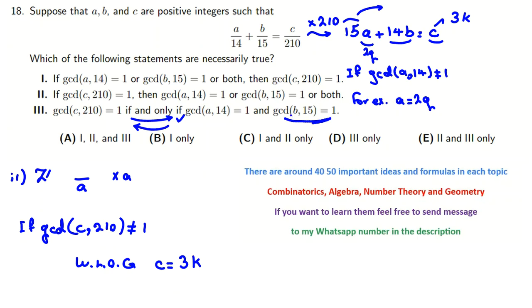But here, we've considered that GCD of B and 15 is 1. Okay? So, by the same way, you can reach contradiction. So, this part is correct. So, third condition is correct.